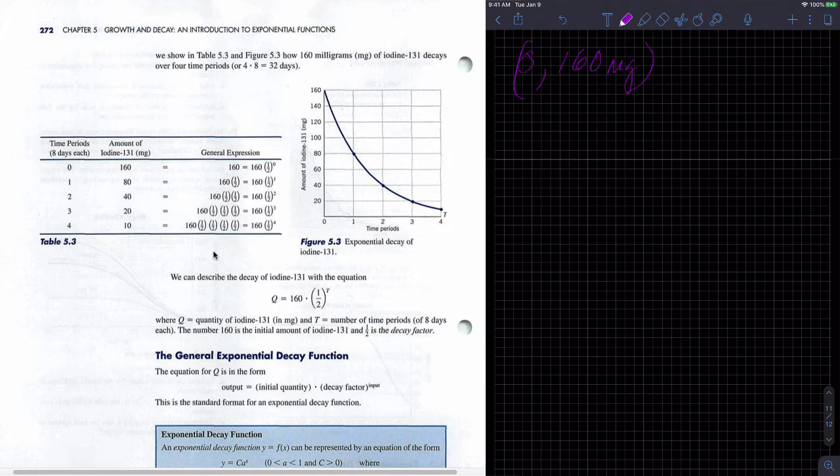So if we look at the table they've built out, they started out with exactly 160. So at time zero, at time zero, we had 160 milligrams. Okay, so that would be day zero.